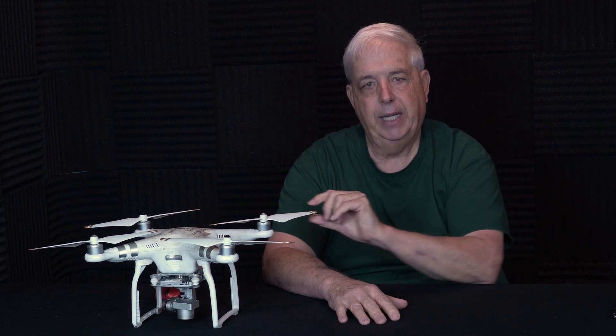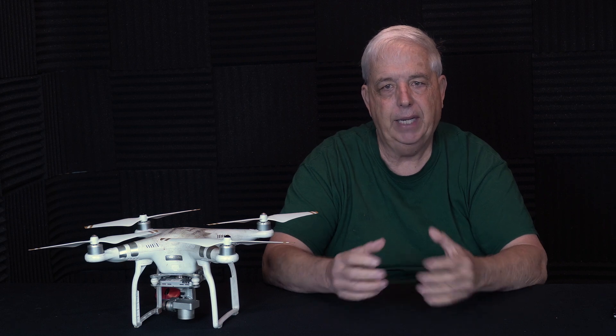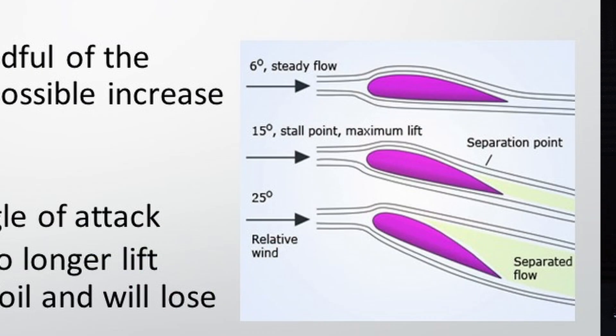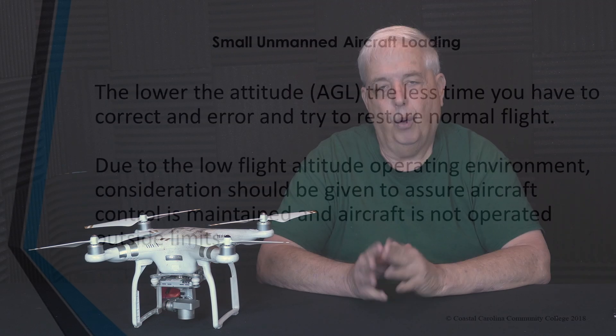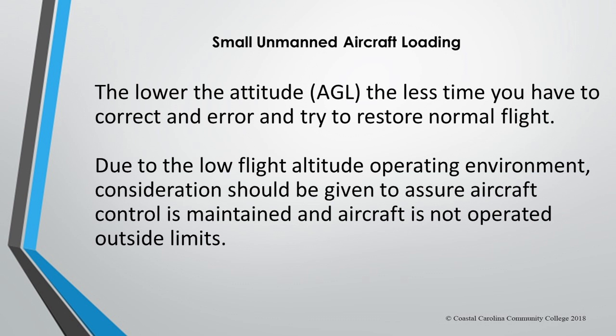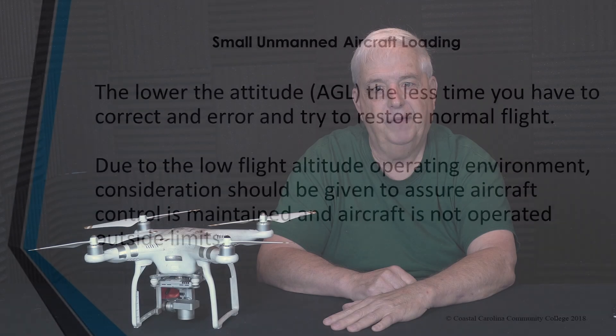The prop is your airfoil — it's what creates lift. If you reach the critical angle, the flow of air over the prop separates and you lose lift capability. Without lift, gravity takes over and your drone goes down. An important consideration is that we don't fly very high — less than 400 feet — so we have very little time to correct and restore normal flight. Therefore, it is critical that you maintain control and do not operate your drone outside its normal limits.